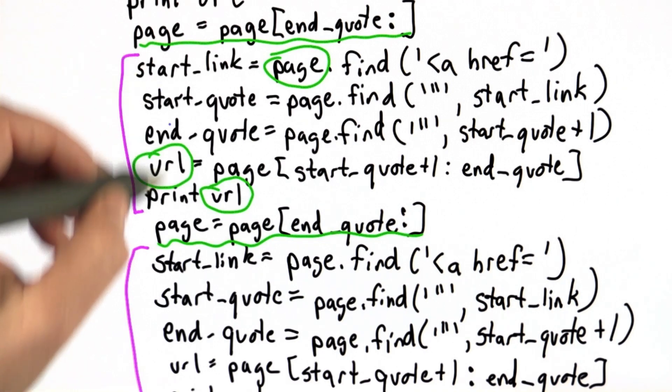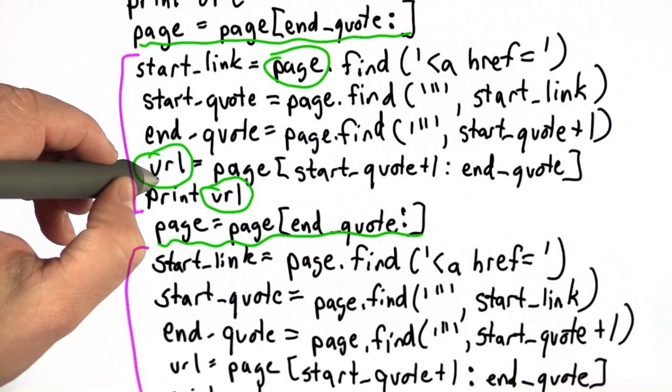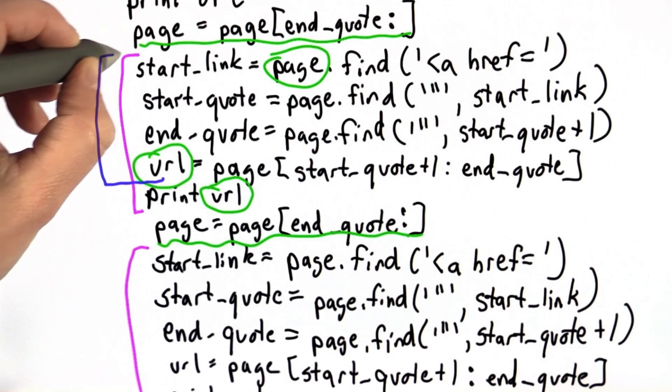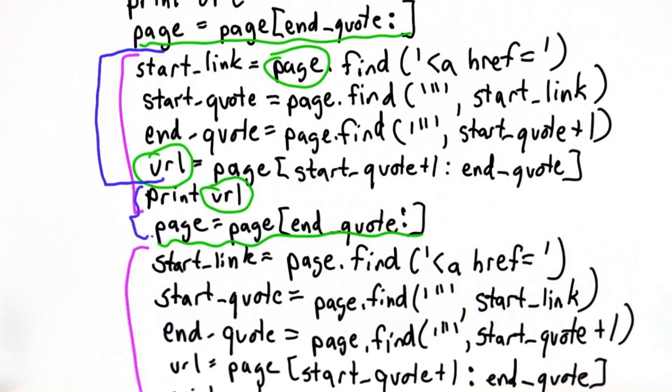What we want to do now is take the part that we kept having to copy and figure out how to turn that into a procedure. We're going to take all the code here, leaving this part out of the procedure because that's what we want to do with the results.